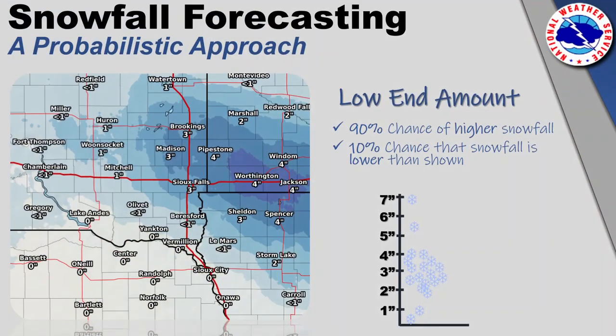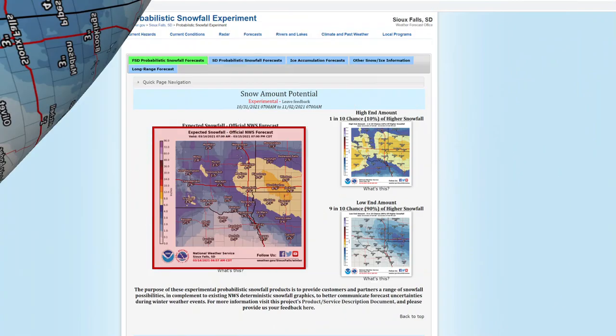On the opposite end of the spectrum, the low end amount represents values that only have a 10% chance of receiving less snowfall, or a 90% chance of greater snowfall.